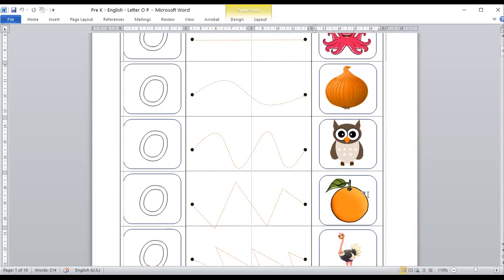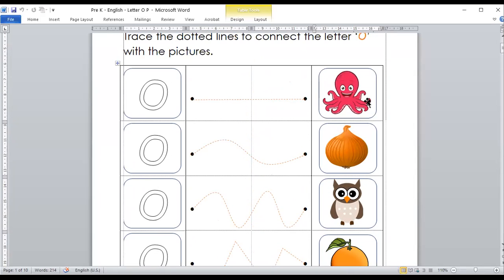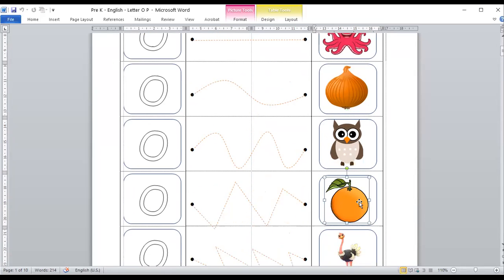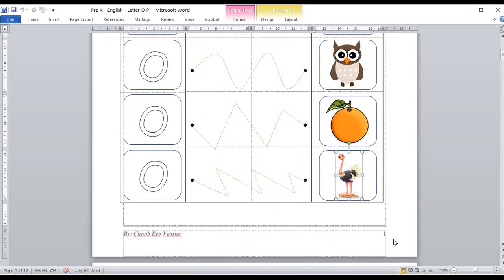Can you remember all of this? Again? Can you repeat after your teacher? Octopus. Onion. Owl. Orange. Ostrich. Good.